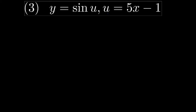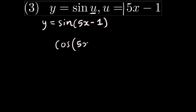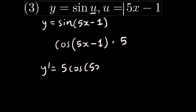For question three, we just have to find the sine of u. y equals sine of u, and instead of u we write 5x minus 1, so sine of (5x minus 1). The derivative of sine is cosine, so we write cos(5x minus 1). Then we find the derivative of the inside: the derivative of 5x minus 1 is 5. So finally the derivative of y is 5cos(5x minus 1).